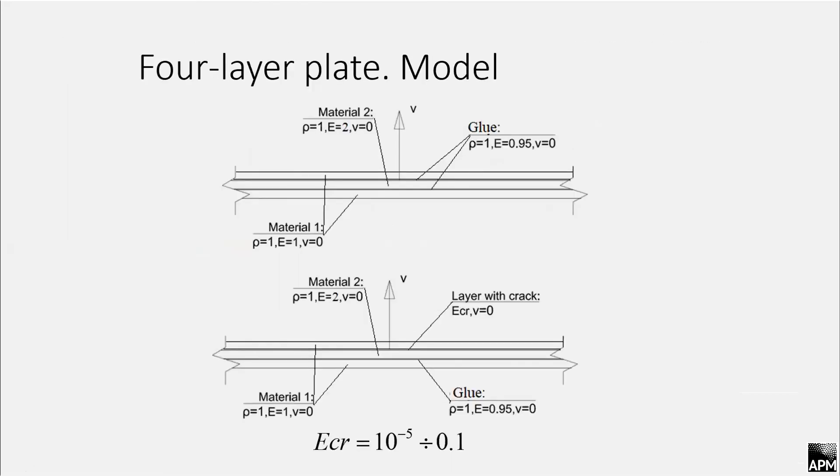Then, let's consider four-layer plate. Here, the model was different, and we have three layers with Young's modulus equals 2 for the middle layer and two outer layers with Young's modulus equals 1. All these layers are connected with glue with density equals 1 and deformation modulus equals 0.95.